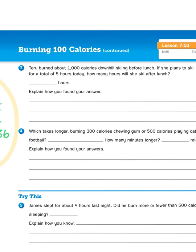Tarou burned about 1,000 calories downhill skiing before lunch. If she plans to ski for a total of 5 hours today, how many hours will she ski after lunch? So 1,000 calories downhill skiing, 5 hours total, how many hours will she ski? This problem has two parts. One, we have to determine how much time 1,000 calories worth of downhill skiing takes and then we need to subtract that difference from 5 hours total.